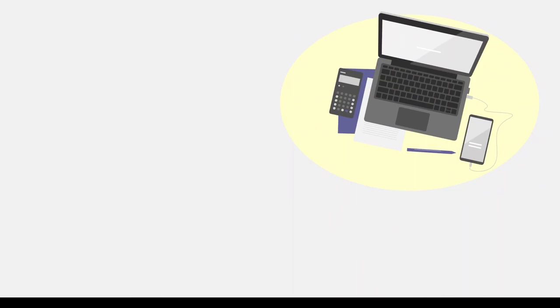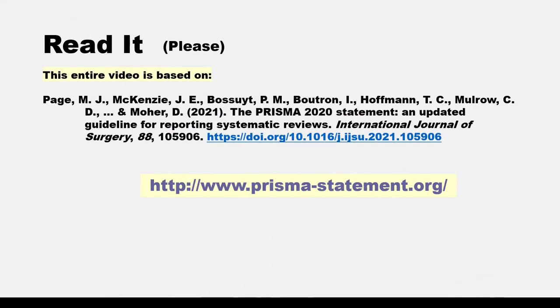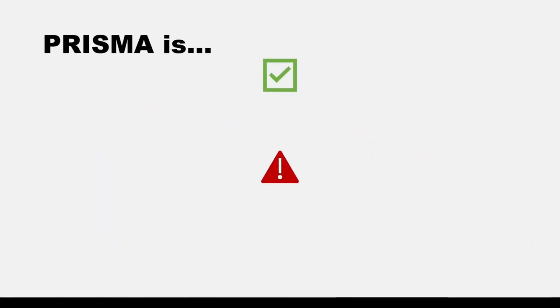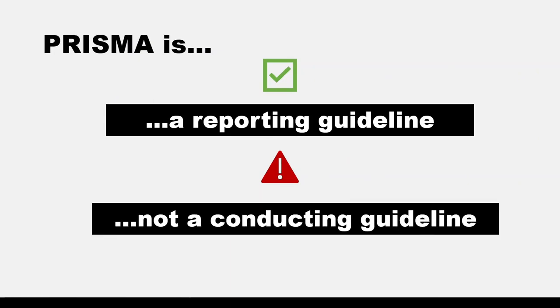The PRISMA Statement is a reporting guideline. It stands for the preferred reporting items for systematic reviews and meta-analyses. The PRISMA Statement can be found at prismastatement.org. I'll link to this in the video description below. If you are authoring a systematic review and or meta-analysis, it is of critical importance that you read the PRISMA Statement thoroughly and review the PRISMA Checklist and the PRISMA Flow Diagram. Please keep in mind that the PRISMA is meant to be a reporting guideline and not a methods or conducting guideline.